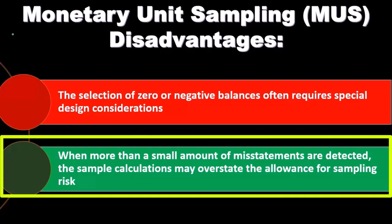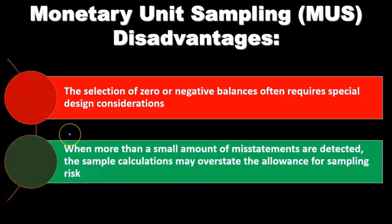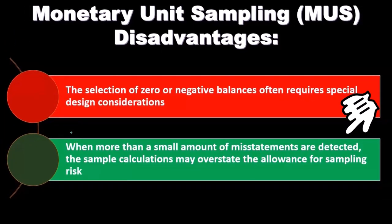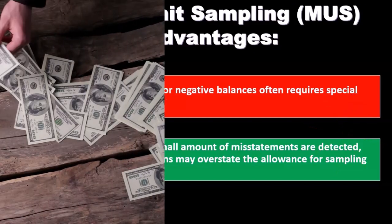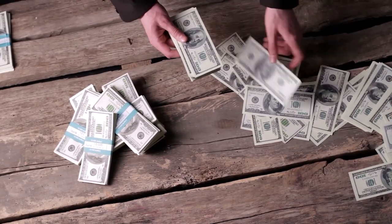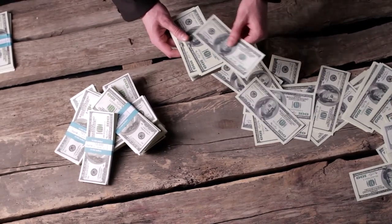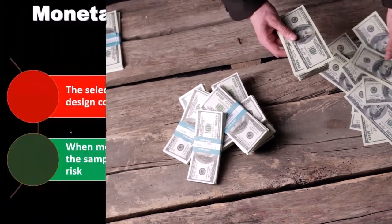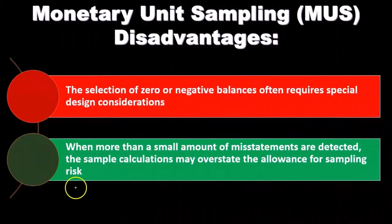Another disadvantage: when more than a small amount of misstatements are detected, the sample calculations may overstate the allowance for sampling risk. This is an important limitation to be aware of when applying MUS in situations where multiple misstatements are found.